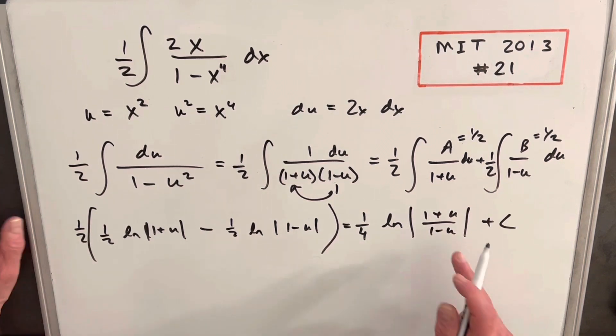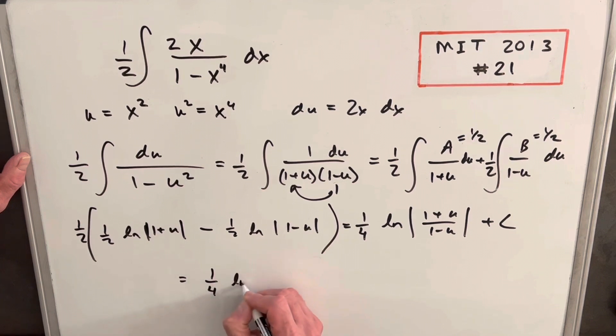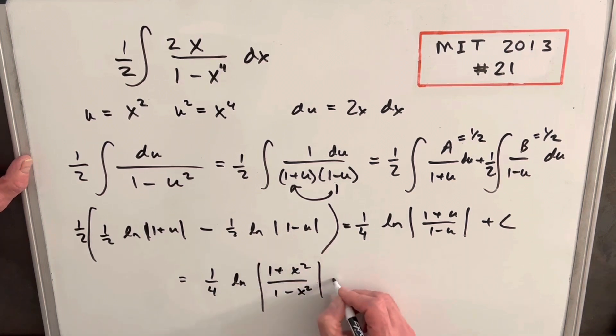And then from here, all we need to do is back substitute. We know our u is x squared. So we can just plug that in to finish this off. So we're going to have one-fourth natural log 1 plus x squared over 1 minus x squared absolute value plus C.